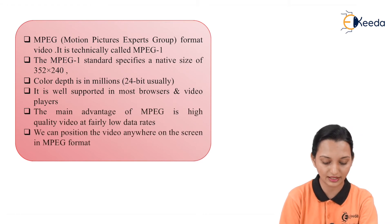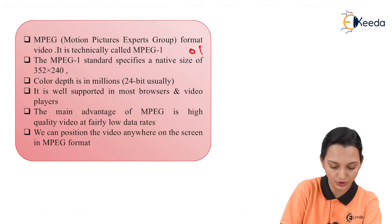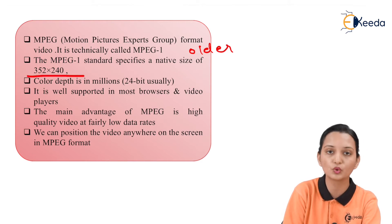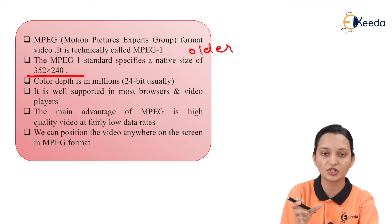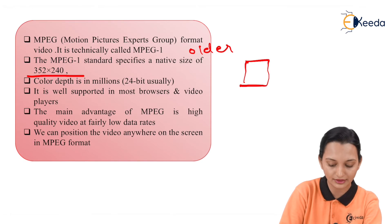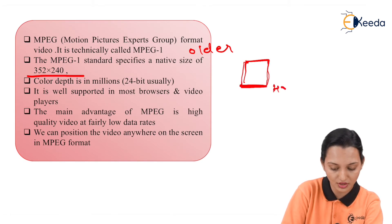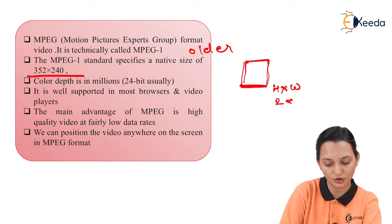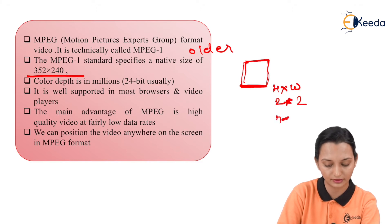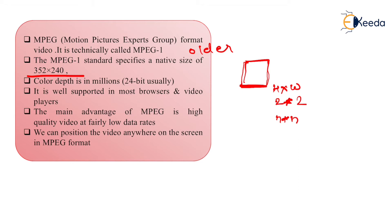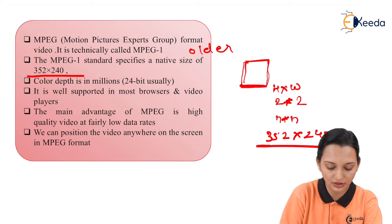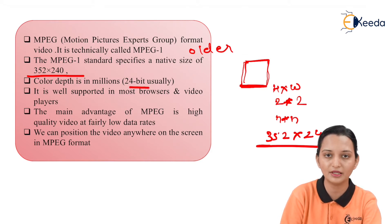The MPEG format video is technically called MPEG 1 — the older format. This standard specifies a native size of 352 x 240. The input size can be defined in terms of matrices containing height x width, for example 2x2 or NxN. The color depth is 24-bit, though that can vary. MPEG is well supported in most browsers and video players because it is fundamentally a compression technology for video.